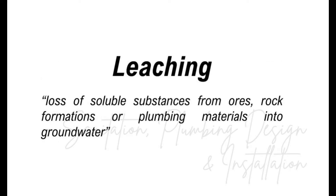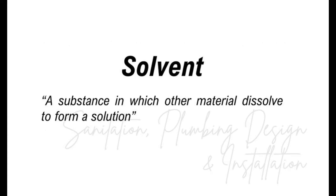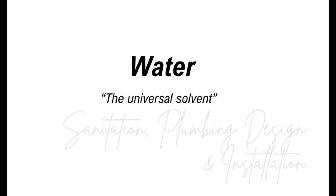Leaching is the loss of soluble substances from ores, rock formations, or plumbing materials into groundwater. A substance in which other material dissolves to form a solution — A, chlorine; B, solvent; C, effluent; D, drainage? The answer is solvent. Solvent is a substance in which other material dissolves to form a solution. What is the universal solvent? A, alkaline; B, acid; C, water; D, effluent? The answer is water. Water is the universal solvent.